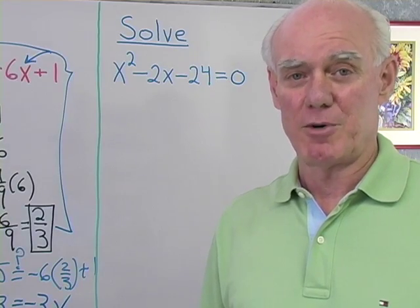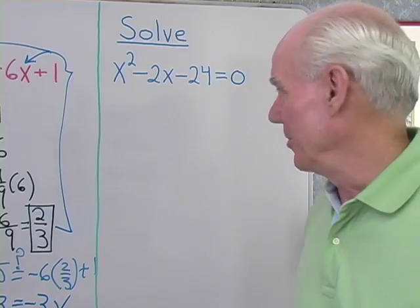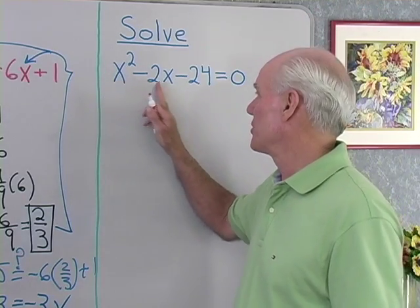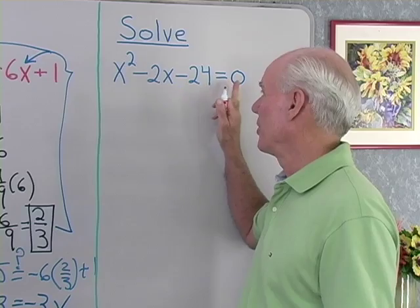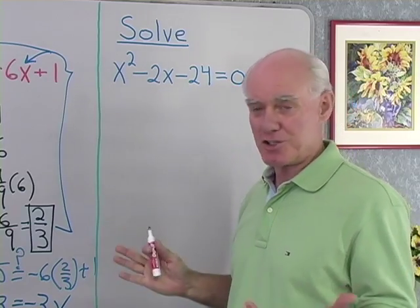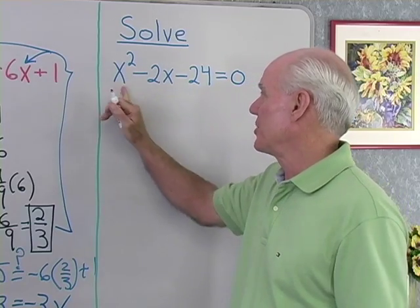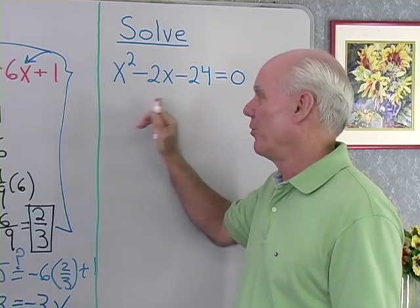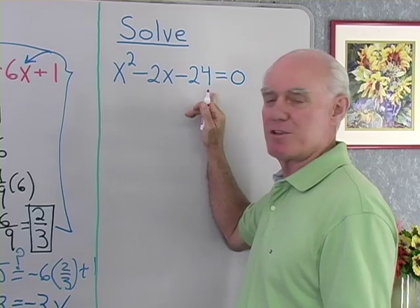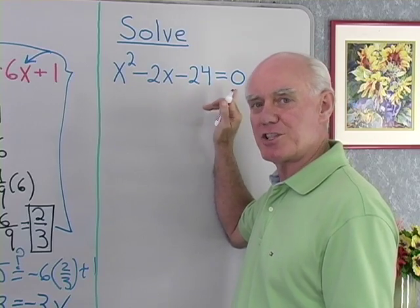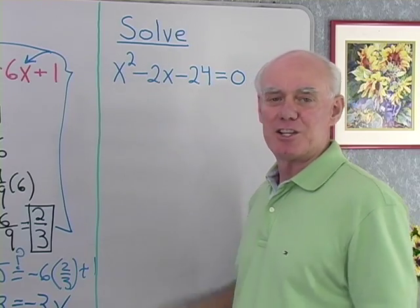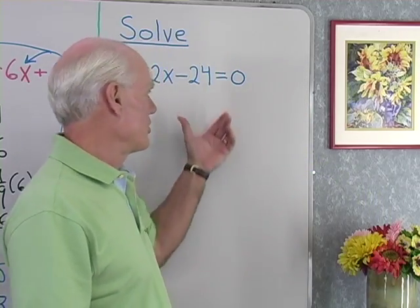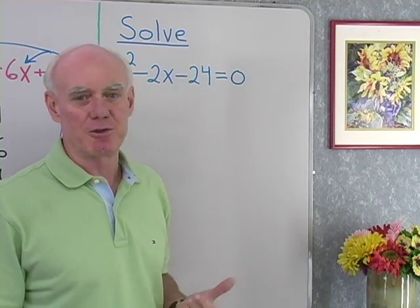Let's solve a quadratic equation in one variable. On the board I have: solve x squared minus 2x minus 24 equals 0. This is a quadratic equation in one variable and it's already in standard form — decreasing powers of the variable on one side and 0 on the other side. To solve this equation we need to use the zero factor property.